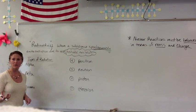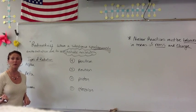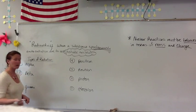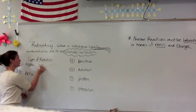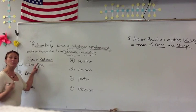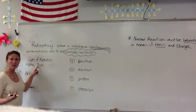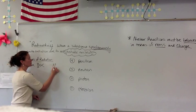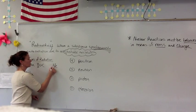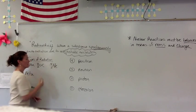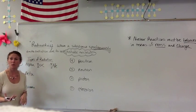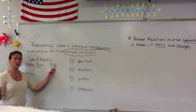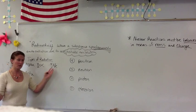One of the first particles that you really need to be familiar with is an alpha particle. It has a mass of four and a charge of two. This can also be symbolized as a helium nucleus, because having two protons is just a helium nucleus itself.